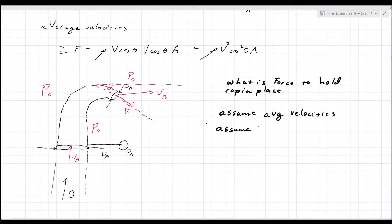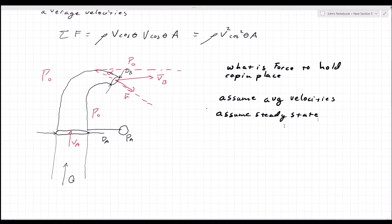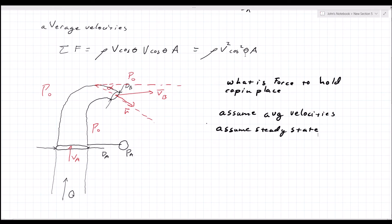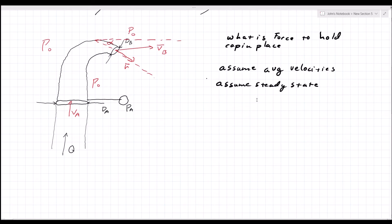If you want to do a problem without average velocities, in my previous video — Lesson 4 — I did the flow through a pipe. If you want to analyze the forces caused by that flow, I'd recommend going back and getting those velocities from the Lesson 4 video and plugging them in here. At the very end I will copy down the equation you should get if you want to check it. I'm not doing it in this video because after the setup it's just math and the integration is quite long.